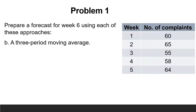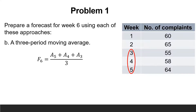The second requirement is to calculate the forecast for week 6 using the 3-period moving average. This means using the most recent 3 weeks, which are weeks 5, 4, and 3. So F6 = (A5 + A4 + A3) / 3, which equals (64 + 58 + 55) / 3 = 59.